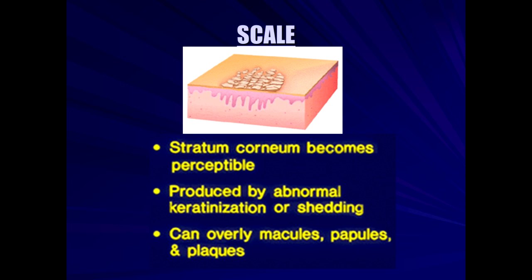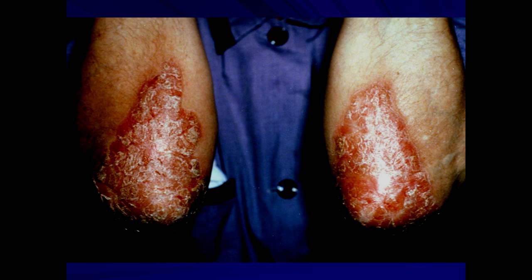Scale: going back to the stratum corneum, the surface layer of the skin becomes perceptible — there's scale, desquamation, shedding. As I mentioned earlier with psoriasis, you see the presence of erythematous plaques that are scaly, with desquamation and shedding.